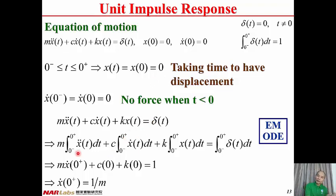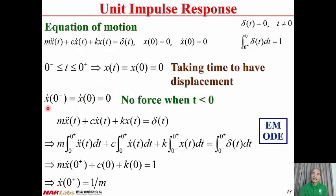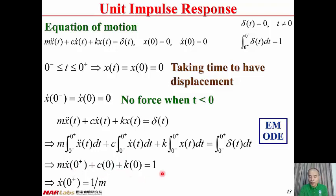After integration, the M·x-double-dot term becomes the velocity: x-dot(0+) − x-dot(0−). Since there is no force when T < 0, x-dot(0−) = x-dot(0) = 0, so x-dot(0−) vanishes. We are left with M·x-dot(0+) + C·0 + K·0 = 1, so x-dot(0+) = 1/M.